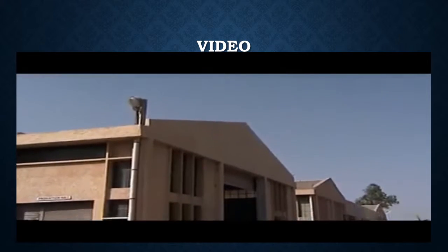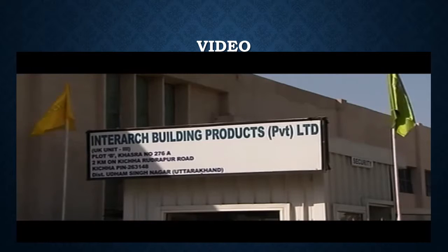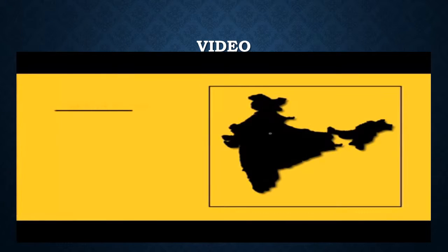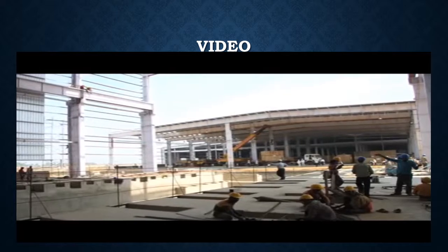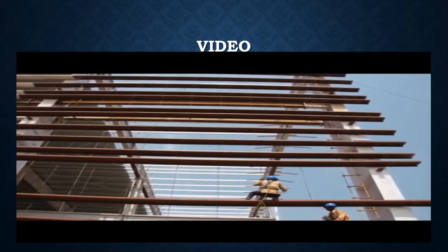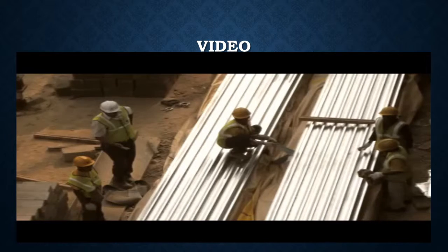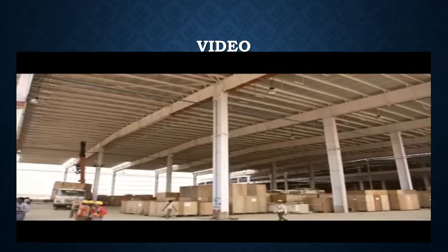Interop pre-engineered buildings are manufactured at our world class manufacturing units spread over four locations in India. Interop pre-engineered building construction offers on-site assembly, reducing on-site fabrication, storage, and material handling.